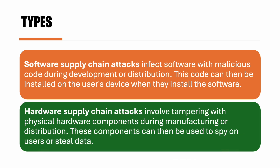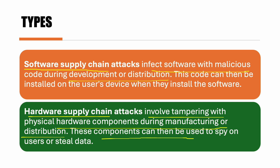The supply chain attack targets the less secure element in a supply chain network, and there are two kinds: software supply chain and hardware supply chain. A software supply chain attack infects software with malicious code during development or distribution. A hardware supply chain attack involves tampering with physical hardware components during manufacturing or distribution — these components can then be used to spy on users or steal data.